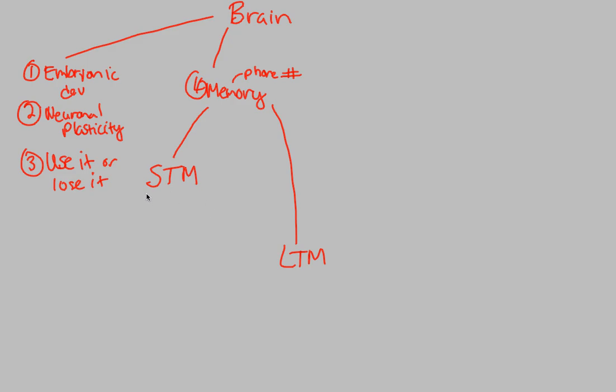Short-term memory involves storage of information at the hippocampus. The hippocampus is a part of the brain devoted to storing information for about 30 seconds, close to 30 seconds. It holds about seven plus or minus two pieces of information. Seven is about a phone number. So if we think of a phone number...